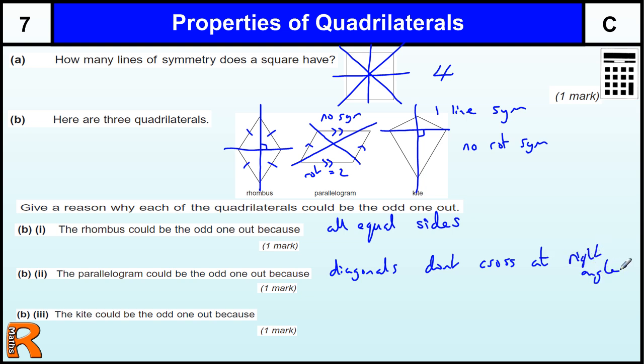Another thing you can do is talk about rotational symmetry or no symmetry, no line symmetry. Or you could say it's got rotational symmetry order 2, but I think the rhombus probably does as well, so that wouldn't work, it wouldn't be unique.